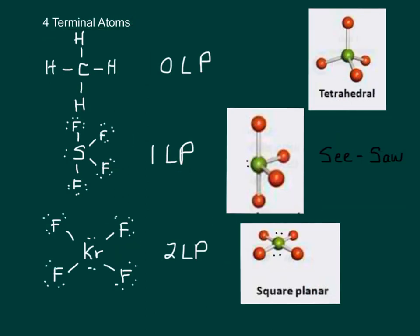Now, if you have four terminal atoms, there's three different choices: four with no lone pairs, four with one lone pair, and four with two lone pairs. Tetrahedral, seesaw—you'll see why it's called seesaw when we make the model—and square planar.